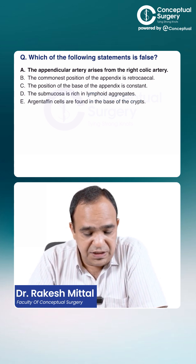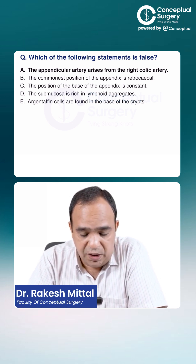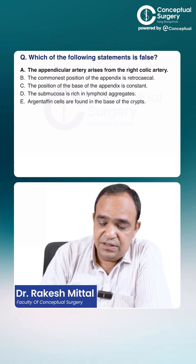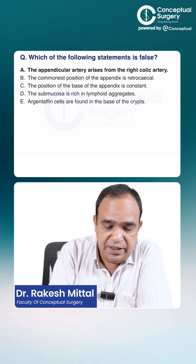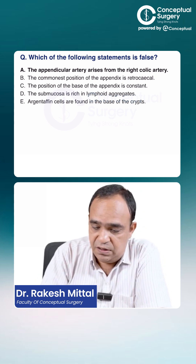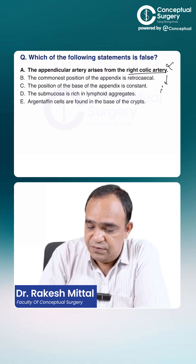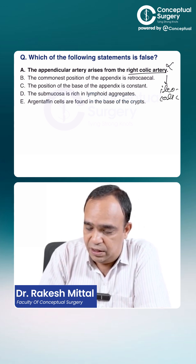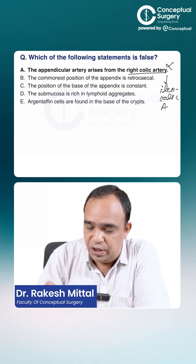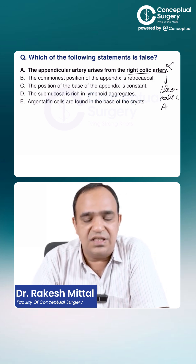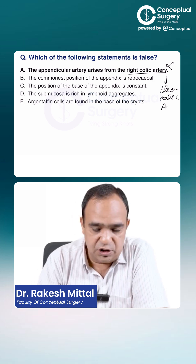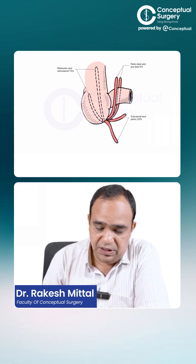Which of the following statements is false? The appendicular artery arises from the right colic artery — this is wrong. It actually arises from the ileocolic artery, which can also be called the ileocecal artery.